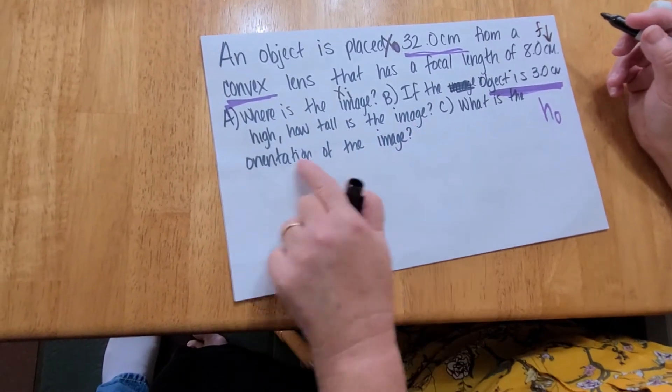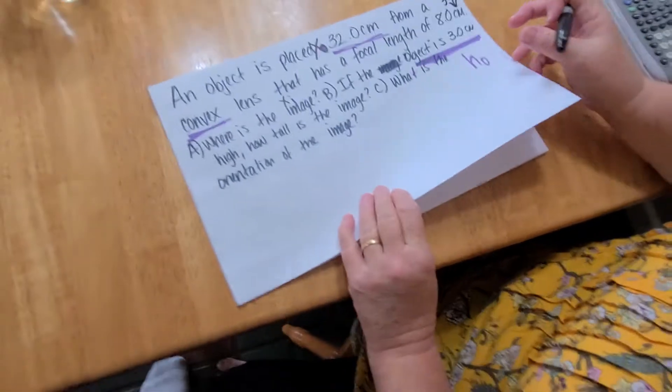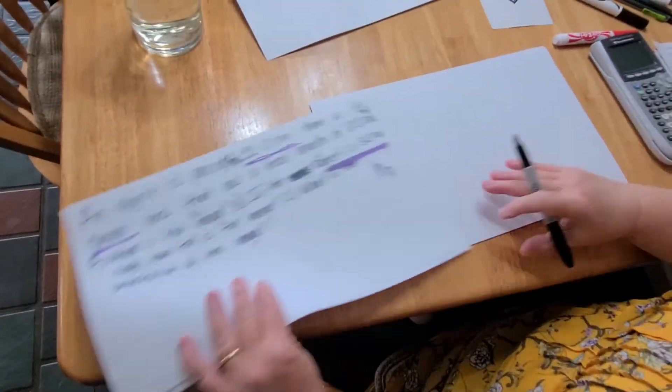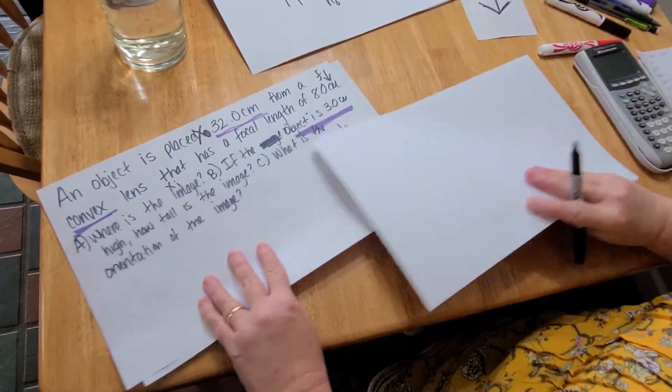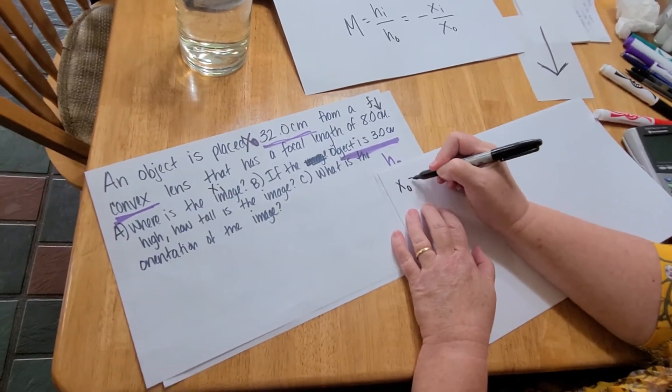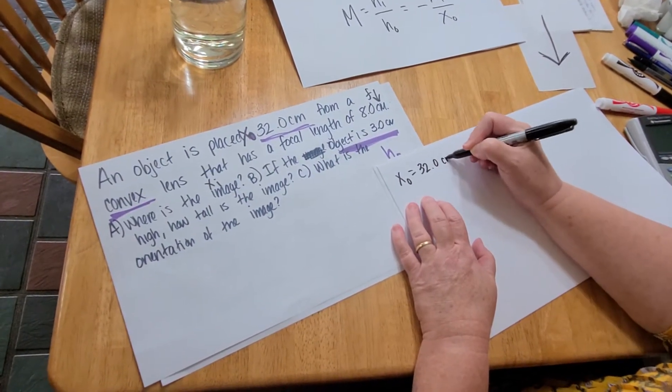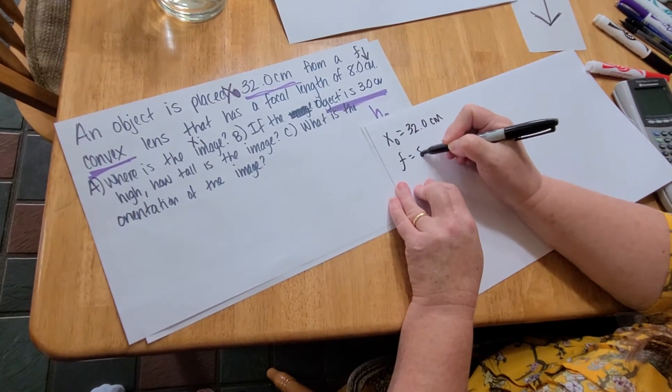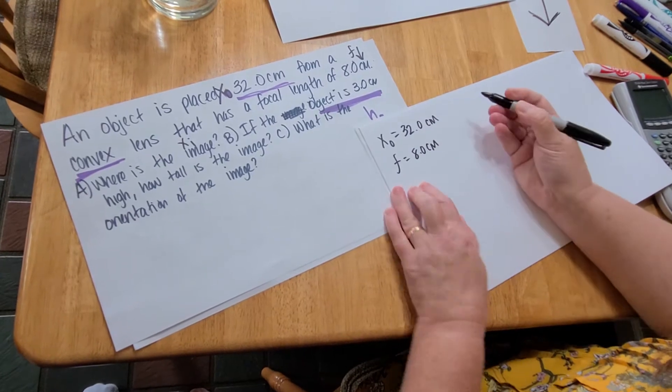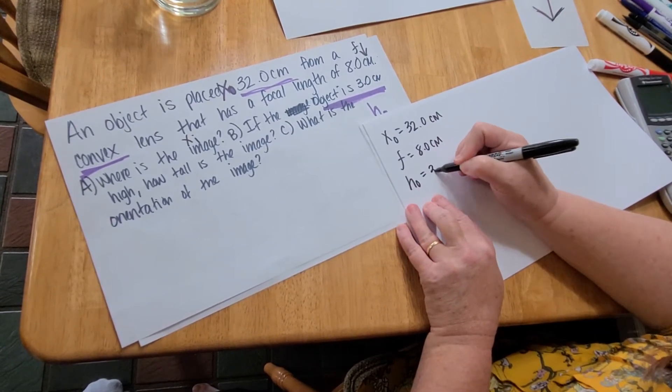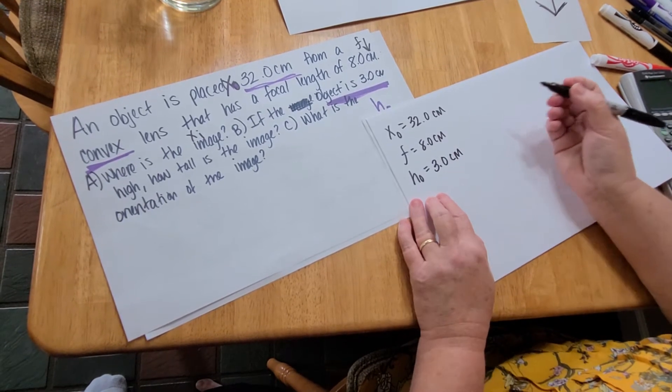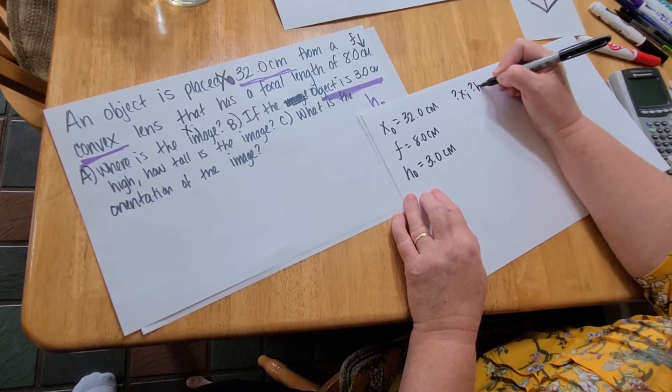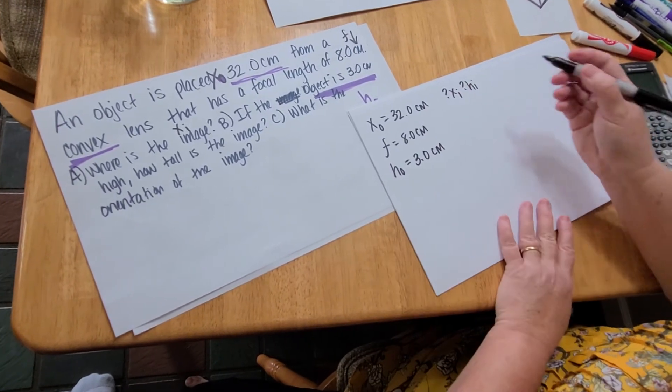They want to know the orientation, just like the arrow flipping back and forth. So we're going to take the equations that I just discussed and use them to figure out the answers. I have an object that is 32 centimeters from a converging or convex lens, and that convex lens has a focal length of eight centimeters. I also know that the object is three centimeters tall. They want to know XI and the height of the image.